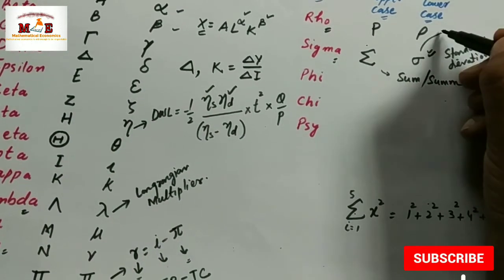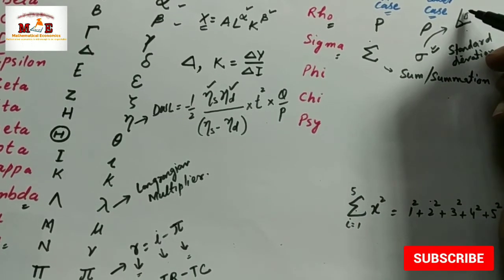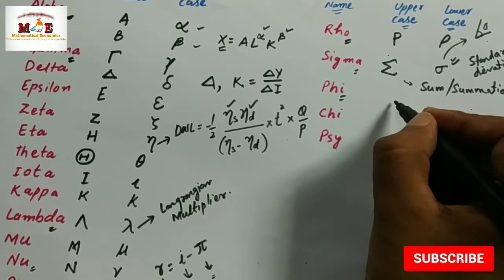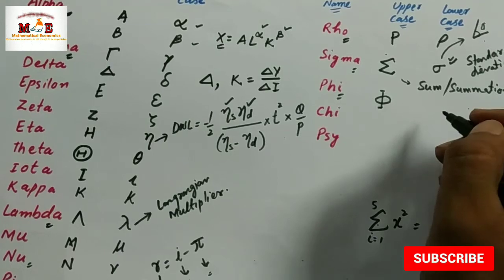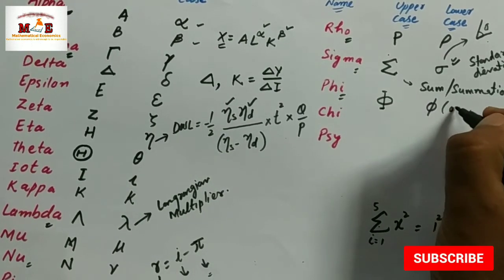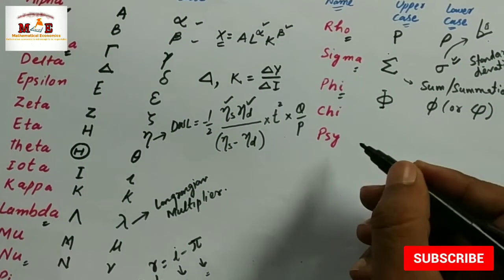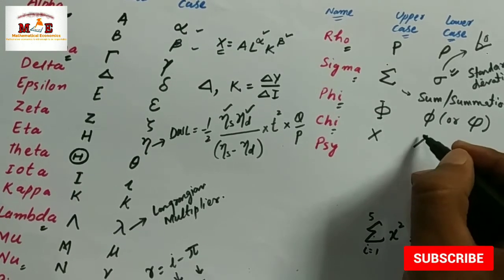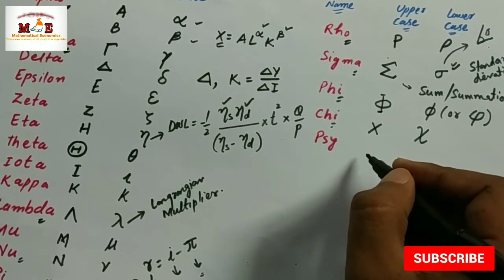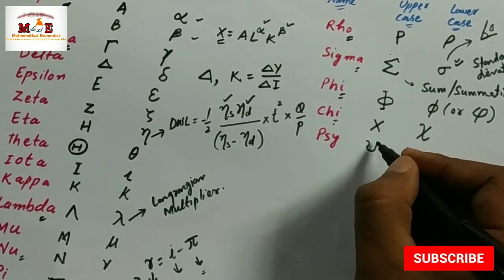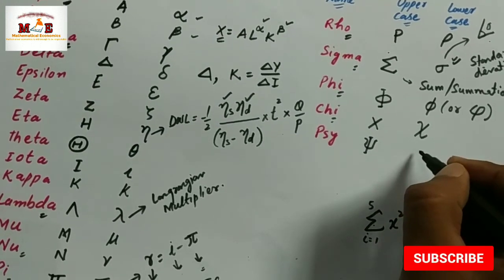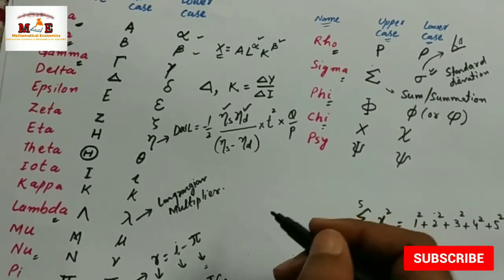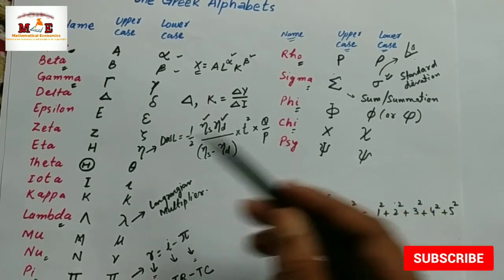In mathematics, sigma is also used to represent angles. Then there is tau, phi, chi, and psi — each with their own uppercase and lowercase forms as shown. These were some important Greek alphabets which are used in economics. Thanks.